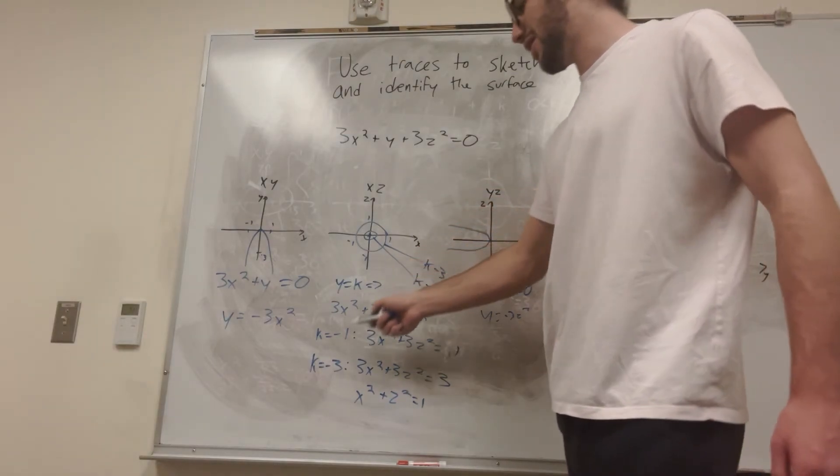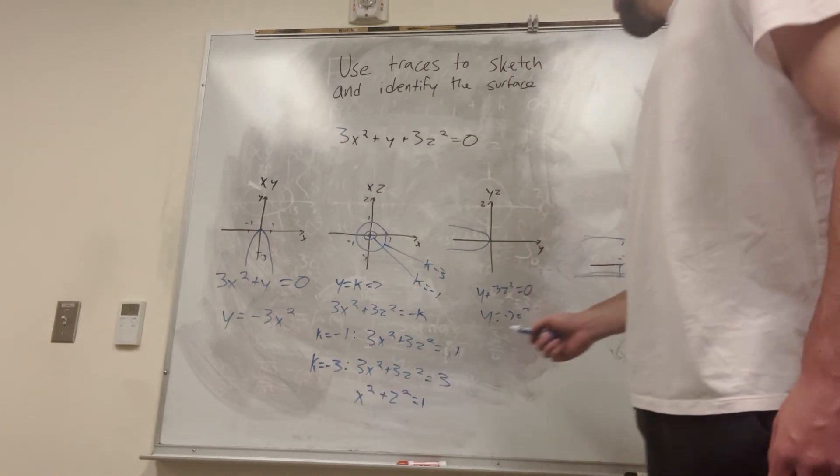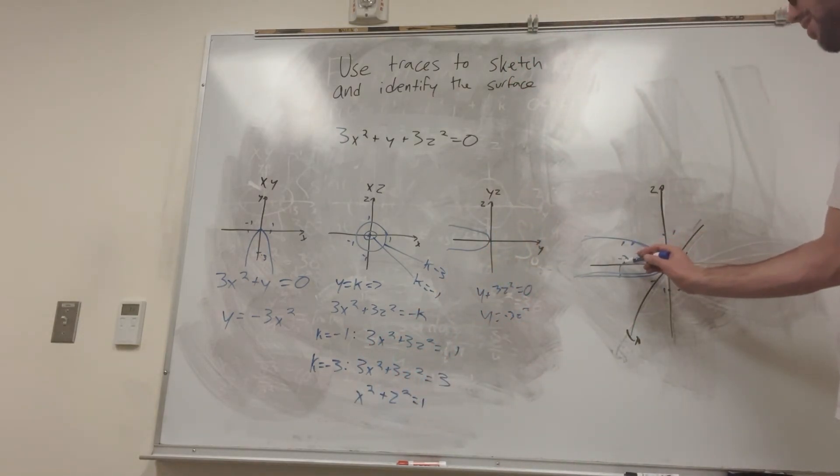You see that y is equal to k, so therefore when y is equal to negative 3, we're going to have a circle with radius of 1, right? So let's go here, y is negative 3, circle with radius of 1. We actually already drew this. Pretty cool, right?